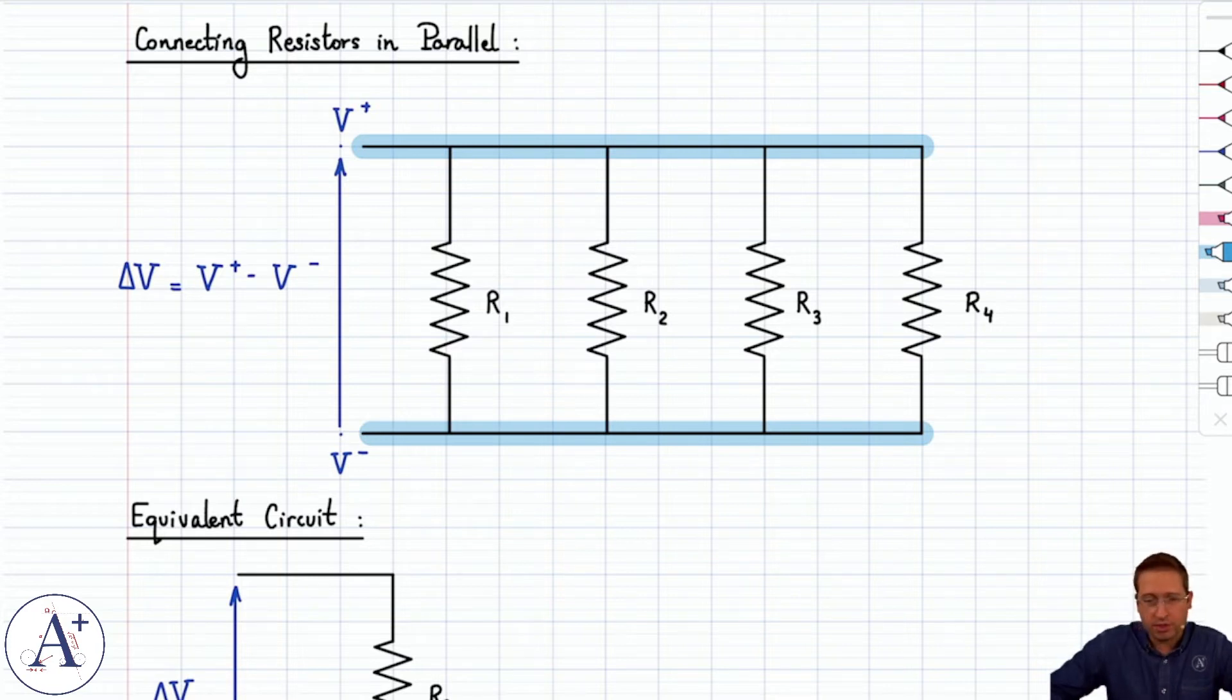In other words, now we have four resistors that are identically connected across the voltage, and in fact, all see the same voltage, and that's the definition of being in parallel.